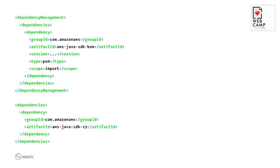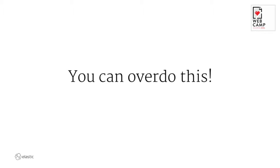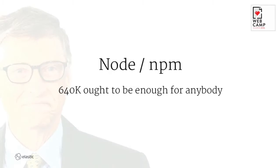Can you overdo this? Yes. Here I'm thinking more about the Node NPM world. Bill Gates once famously said 640k ought to be enough for everybody. In the NPM world, it's like: can I build my project with just 640k dependencies, or do I need more? Yeah, that can go pretty wrong — people remembering left-pad.